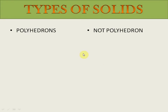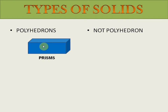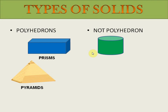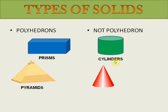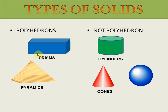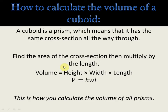Some types of solids: a cuboid is a prism and is a polyhedron. A pyramid is also a polyhedron-like shape. However, a cylinder, cone, and sphere are not polyhedrons because a circle is not a polygon. Polyhedron shapes have polygons — shapes with enclosed sides — that join together to form a solid or prism.